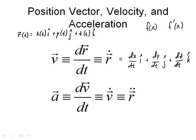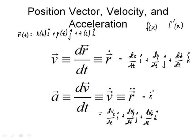Acceleration is the derivative of velocity with respect to time. This would be the derivative of v-sub-x with respect to time in the i-hat direction, plus the derivative of v-sub-y with respect to time in the j-hat direction, plus the derivative of v-sub-z with respect to time in the k-hat direction. Or this might be written as x-double-dot in the i-hat direction, plus y-double-dot in the j-hat direction, plus z-double-dot in the k-hat direction. Both notations are the same thing.